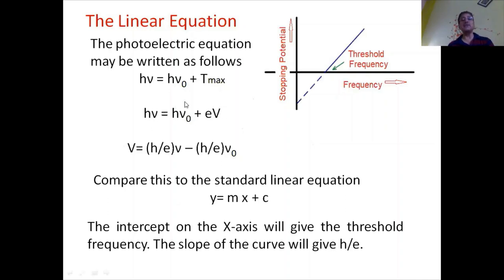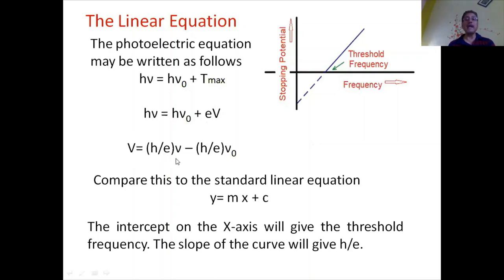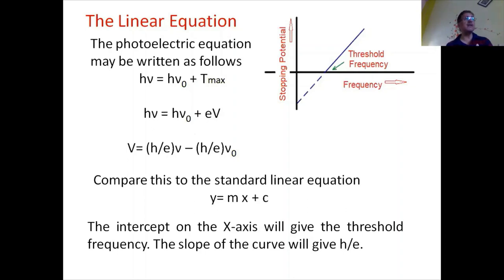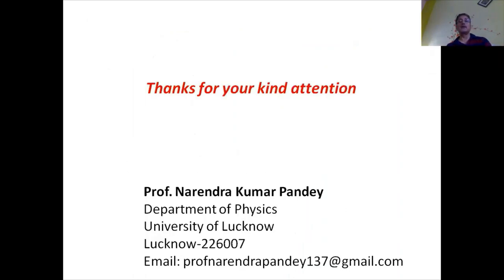Considering Einstein's relation again, h nu equals h nu naught plus T maximum, and T maximum equals e times V (the stopping potential), we can rearrange to get V equals (h/e) nu minus (h/e) nu naught. Plotting a graph between stopping potential V and frequency nu, comparing with the standard linear equation, h/e is the slope of the curve — so the slope gives a measurement of Planck's constant. The intercept on the x-axis (the frequency axis) gives the measurement of the threshold frequency. Thus, we have been able to explain the photoelectric effect on the basis of quantum theory. Thanks for your kind attention.